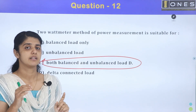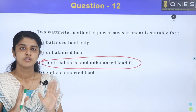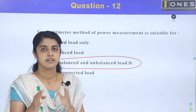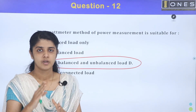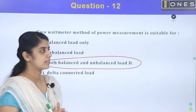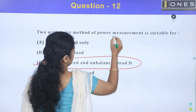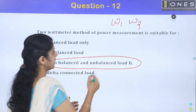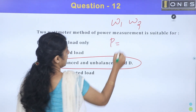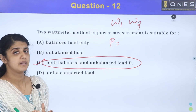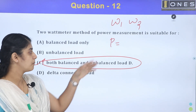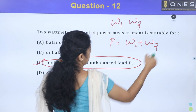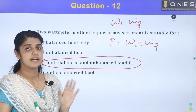Let's take detail about the two wattmeter method. There are two wattmeters, W1 and W2. Active power P — also called kilowatt or true power — is equal to W1 plus W2, giving the total active power in the circuit.